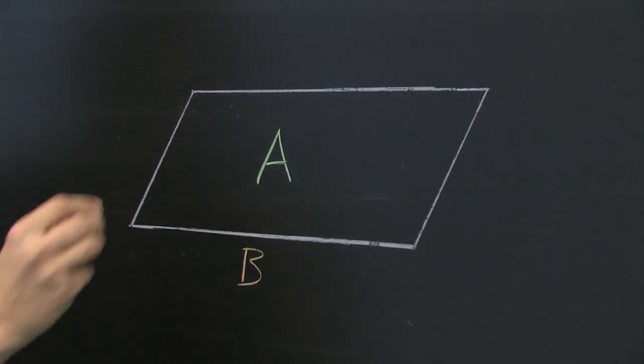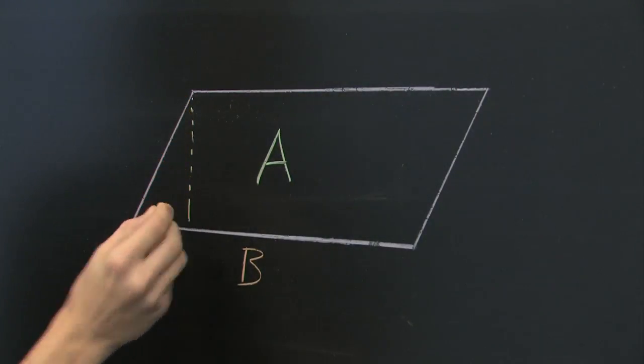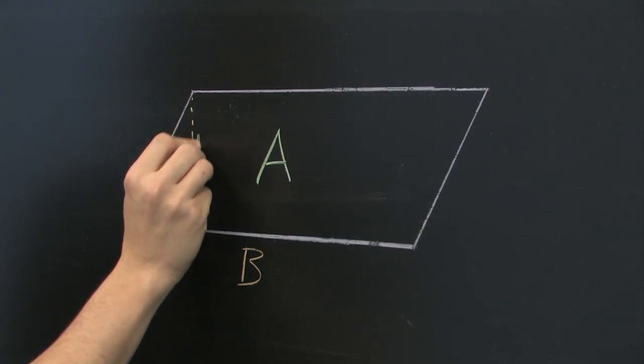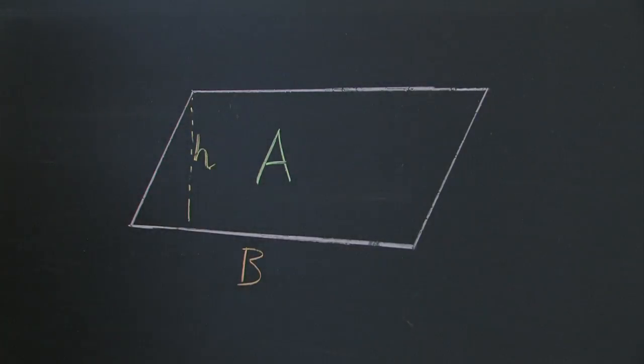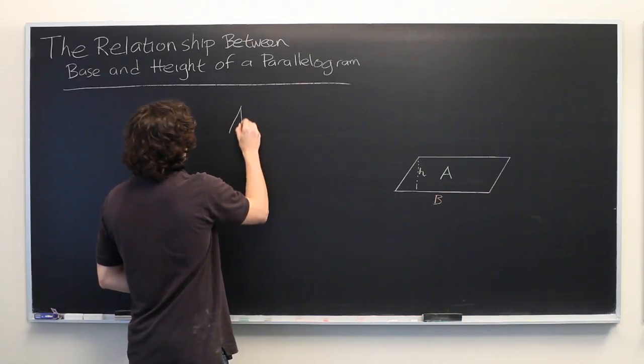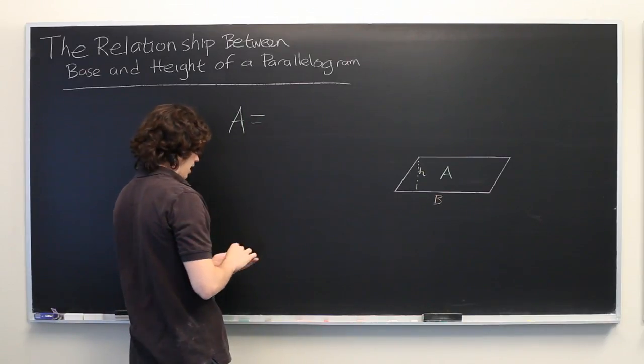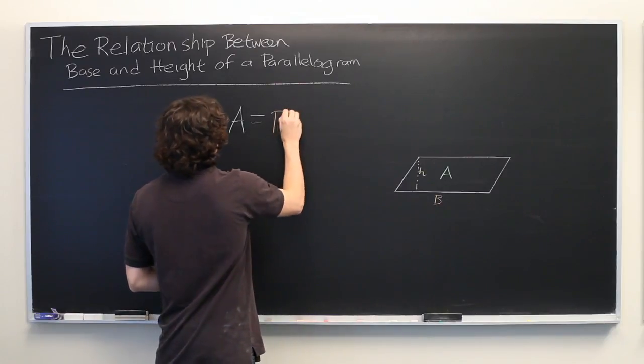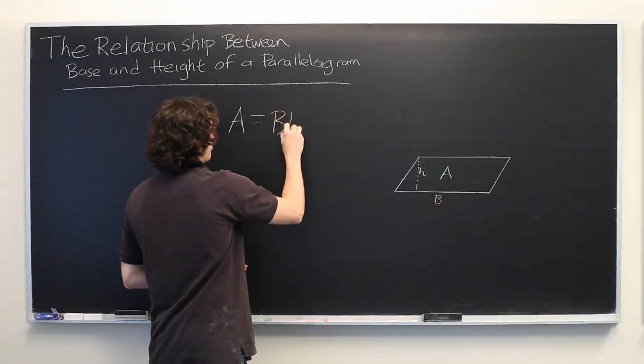What we want to know is what relationship, if any, does there exist between the area, the base, and the height, H. It may surprise you to learn that A is simply equal to base times height.